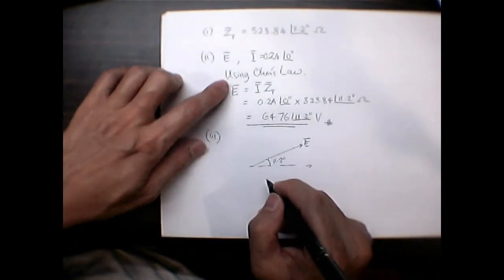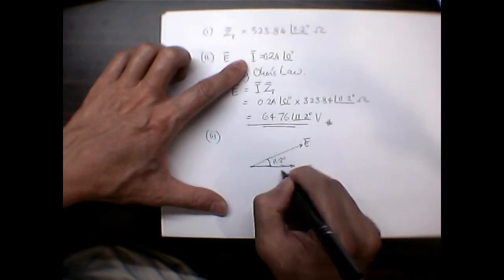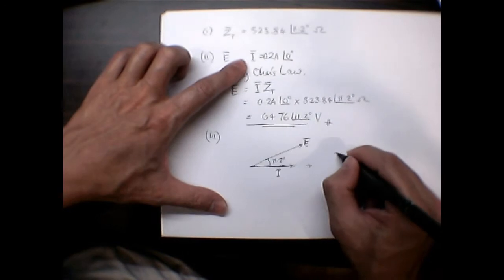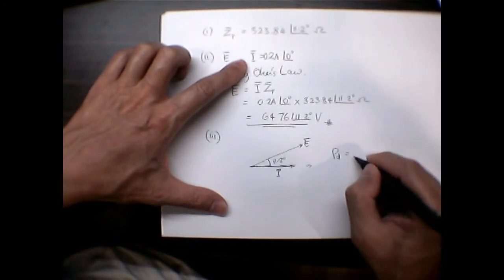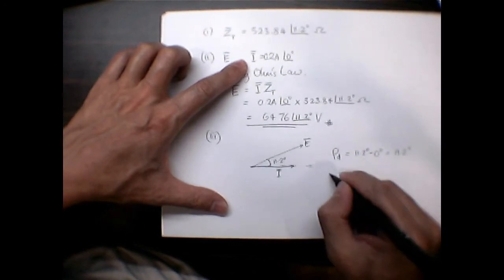Whereas the current is at angle zero, so the phase difference is here. The phase difference is actually 11.2 degrees minus zero degrees, that's 11.2 degrees.